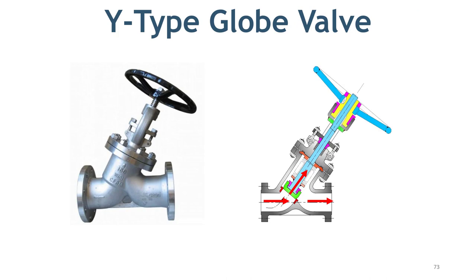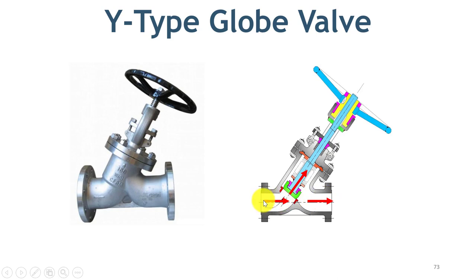Y-type body is the solution to the excessive pressure drop in T-type globe valve. Look at the body shape of this type of globe valve. Here you can see that the flow of the fluid only changes direction slightly, and the disc moves at a 45-degree angle, providing very little resistance to flow. This arrangement of body and disc makes the Y-type globe valve suitable for services where pressure drop is not desired. The shape of the body also makes it easier to identify this type of valve in the field.